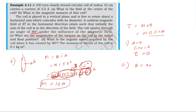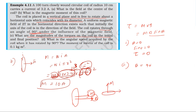The coil is placed in the vertical plane and is free to rotate about the horizontal axis. The magnetic moment is initially in the direction of the horizontal field, so theta = 0. The coil then rotates through 90 degrees, so the angle between M and B becomes 90 degrees, giving maximum torque τ = mB sin(90°) = mB.